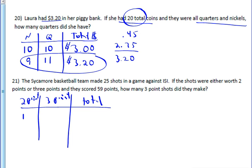I'm going to do the same thing I did before and use a guess that's pretty close together: 12 two-pointers and 13 three-pointers. That's going to give me 24 — 2 times 12 — plus 39 — 3 times 13 — which is 63 points. So I've made too many points. It makes sense that if I've made too many points, I've made too many 3-pointers, so I need to limit it. Going down 1 would give me 26 from the two-pointers and 36, which is just 62.